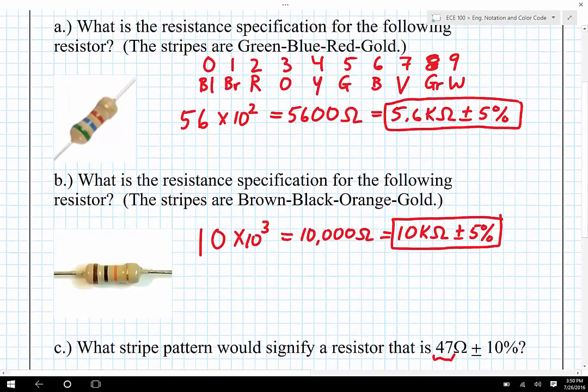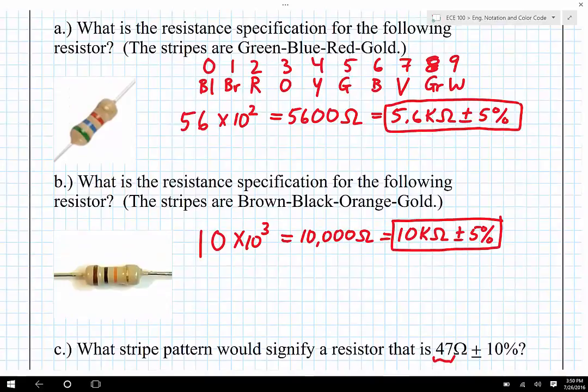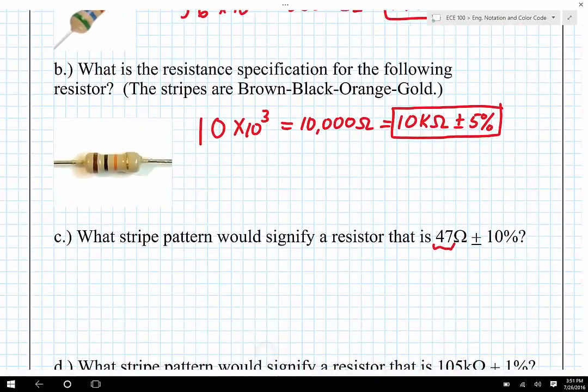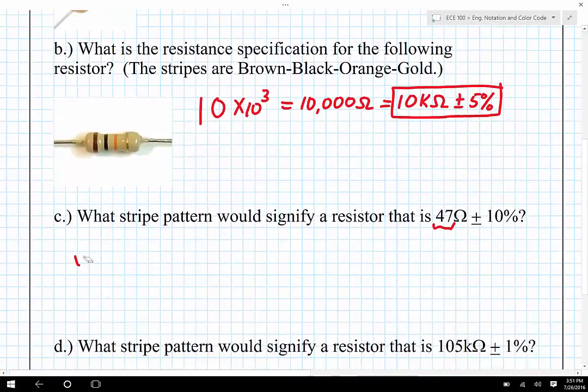So four, if I scroll back up here, four corresponds to yellow, and seven corresponds to violet. So I'm going to have yellow, so 47 is equal to yellow and then violet.